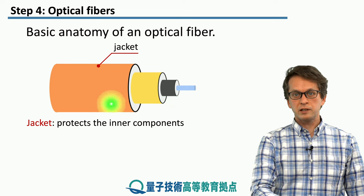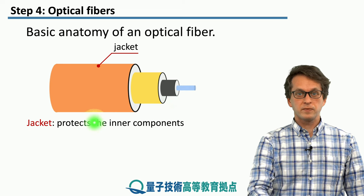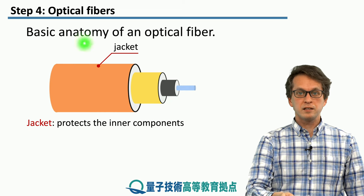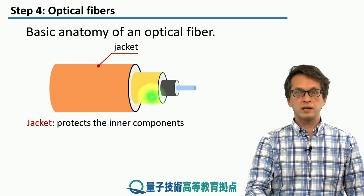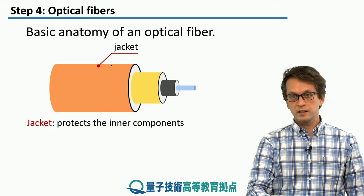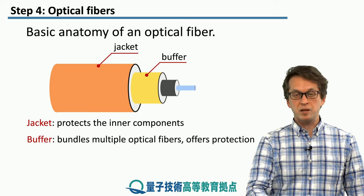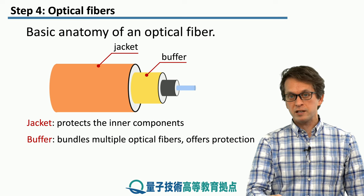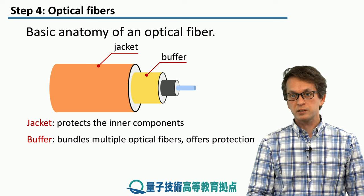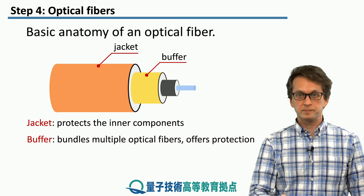On the outer layer we've got the jacket, and this is to protect the inside components of the fiber. Then the next in line is the buffer. The buffer is there also for protection, but it can also bundle multiple optical fibers.